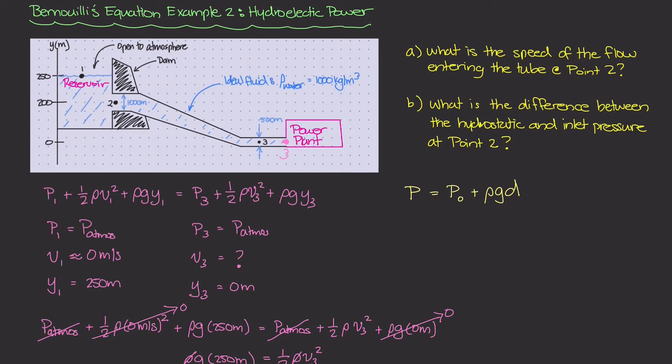What we can do is draw a streamline from point one to point two and then apply Bernoulli's equation for those two points. Because in the last part of the example we figured out the flow velocity V2 at point two, we now have all the terms we need to figure out the pressure difference at point two.